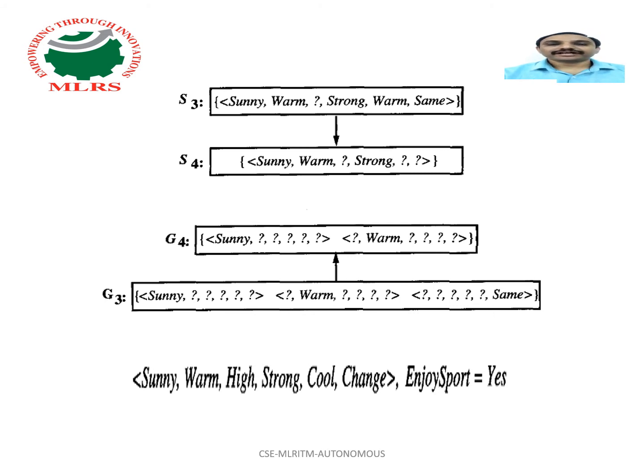Why does the G boundary also change for a positive example? In the above example, for forecast value change, in one case it is yes, in another case it is no.